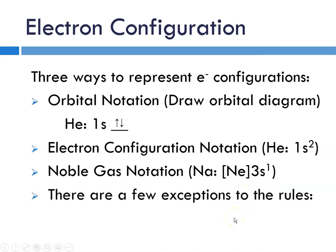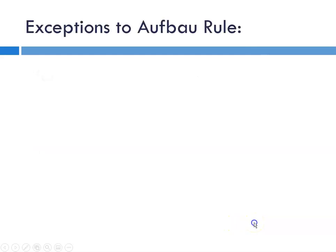We've been filling in some diagrams, and it's important to note that there are a few exceptions to these rules. There are some elements whose atoms do not follow the rules, and the three that I will hold you responsible for are chromium, copper, and molybdenum. Let's see what that looks like.